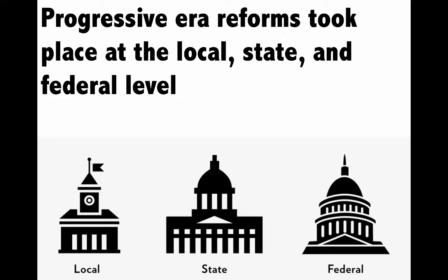Progressive Era reforms took place at the local, state, and federal level. While many reforms took place in individual cities and states, the Progressive Movement does become a national movement under the presidencies of Theodore Roosevelt, Taft, and Woodrow Wilson.